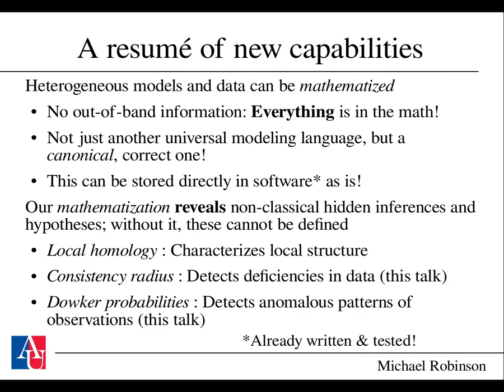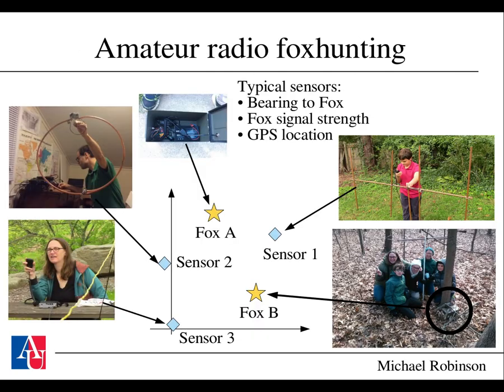In this talk, we will discuss the consistency radius, which detects deficiencies in data and allows you to do data fusion, and the Dauker probabilities that detect anomalous patterns of observations and behaviors. There is also the possibility to characterize local structure using local homology, although that will not be discussed here. To put a rather concrete model in your mind, let us talk about the situation of identifying and locating a hidden radio transmitter.